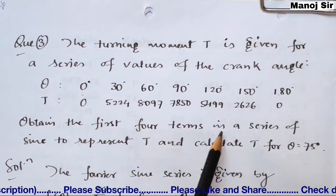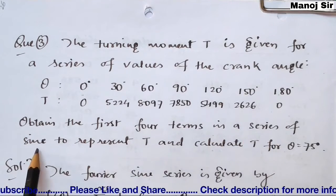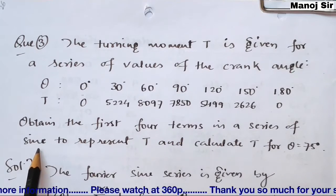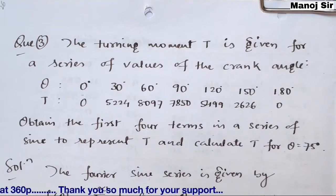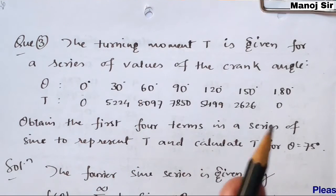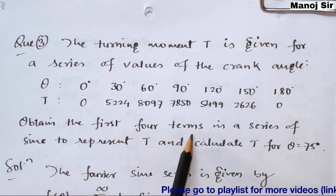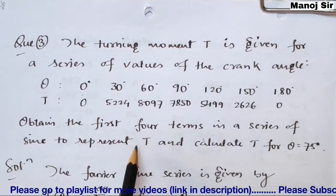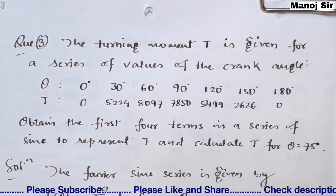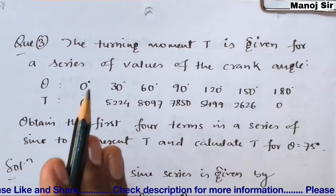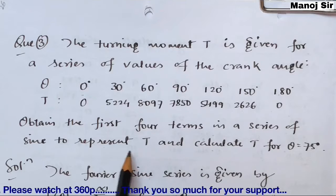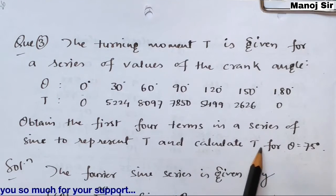Obtain the first four terms in a series of sine — that is, the Fourier sine series. We need to find only four terms: b1, b2, b3, and b4. Obtain the first four terms in a sine series to represent T, and then calculate T for theta equals 75 degrees. After finding all four terms b1, b2, b3, and b4 in terms of T, we will calculate T at theta equals 75 degrees.